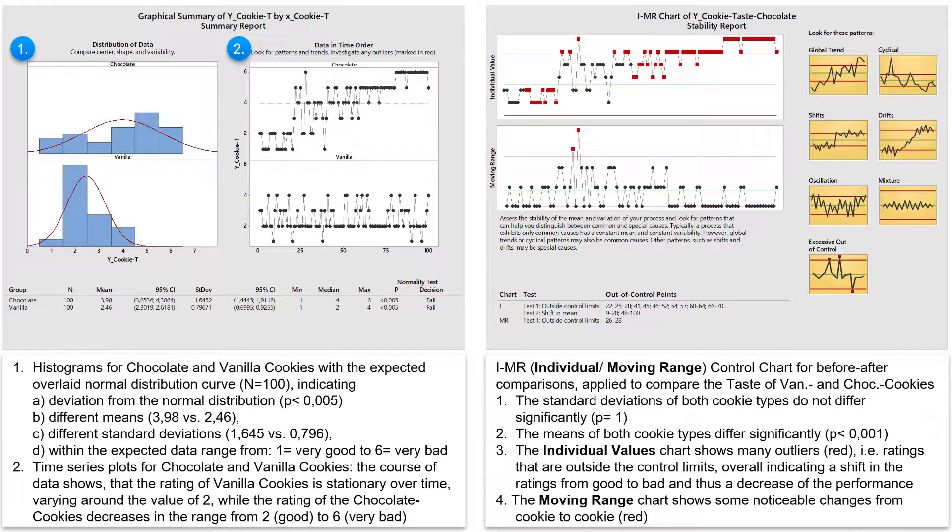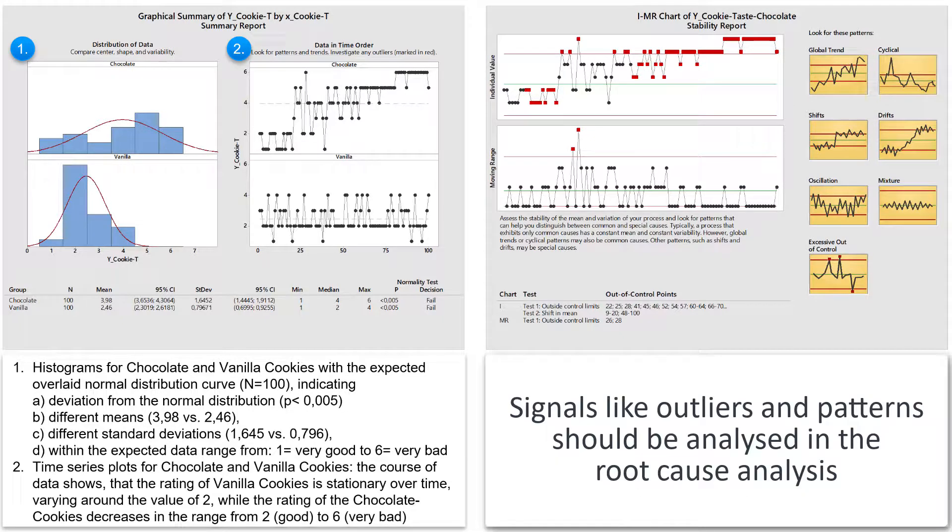Further signals in control charts, such as trends, cycles, shifts and drifts, are described later in the control phase. But we can already here make a note of these signals for our root cause analysis to see what the causes of these shifts and extreme ratings were.